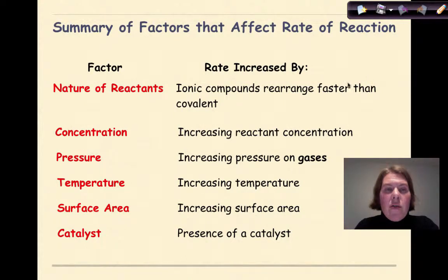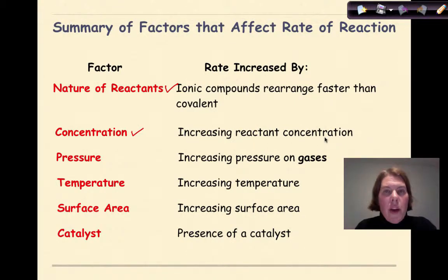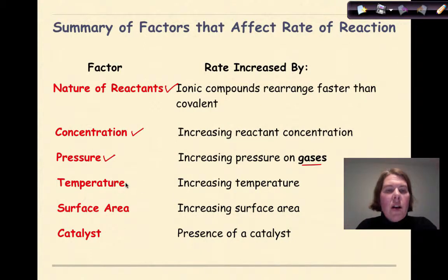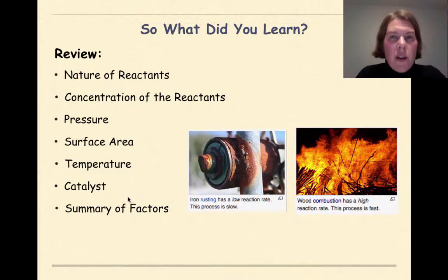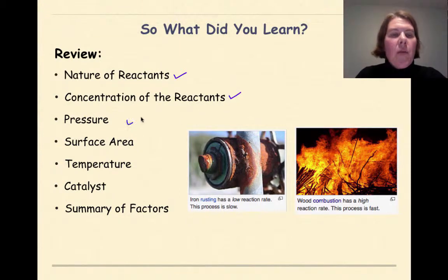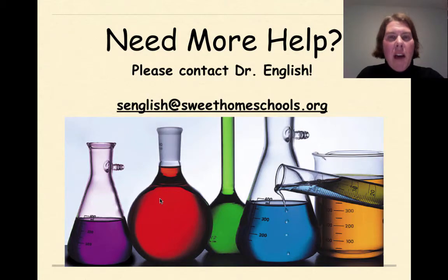In summary, the factors that affect reaction rate are: the nature of reactants, concentration — knowing that increasing the reactant concentration will make the reaction go faster — pressure on gases, temperature, surface area, and finally catalysts. So what did we learn in this tutorial? We've gone over the nature of reactants, how the concentration of reactants influences the chemical reaction, pressure, surface area, temperature, catalyst, and a summary of factors. Need more help? Feel free to contact me. Have a great day.